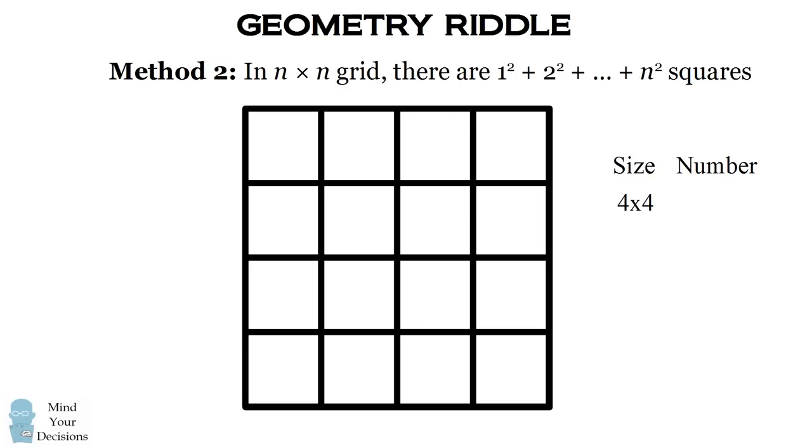We found this already, that the number of 4 by 4 squares was 1, which equals 1². The number of 3 by 3 squares was 4, which equals 2². The number of 2 by 2 squares, remember there were 9 because there were 3 squares per row and 3 rows. And the number of 1 by 1 squares was 16 because there were 4 per row and there were 4 rows.